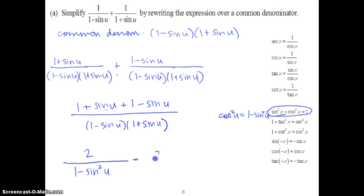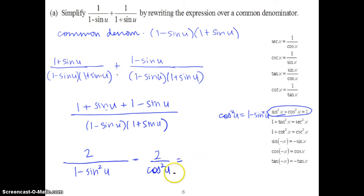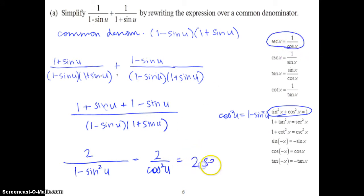We now have 2 over (1 minus sine u)(1 plus sine u). Foiling the denominator gives 1 minus sine squared u. Recognizing that 1 minus sine squared u equals cosine squared u from the Pythagorean identity, we rewrite as 2 over cosine squared u. Since the reciprocal of cosine is secant, this simplifies to 2 secant squared u.